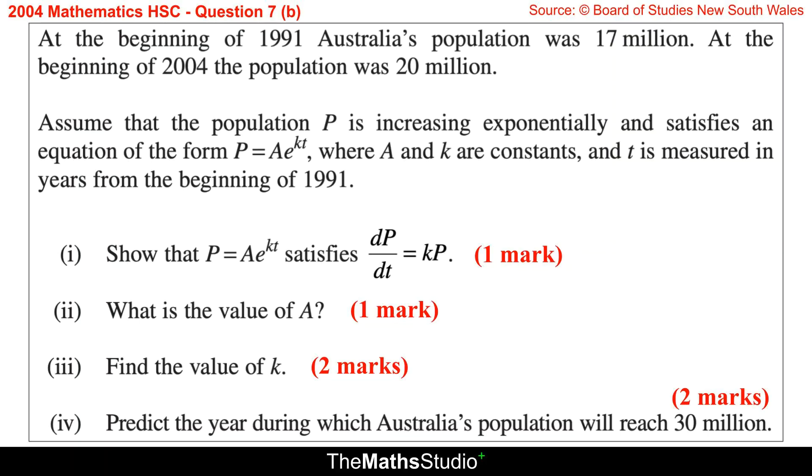Question 7, Part B. At the beginning of 1991, Australia's population was 17 million. At the beginning of 2004, the population was 20 million. Assume that the population P is increasing exponentially and satisfies an equation of the form P equals A times E to the power of KT, where A and K are constants and T is measured in years from the beginning of 1991.